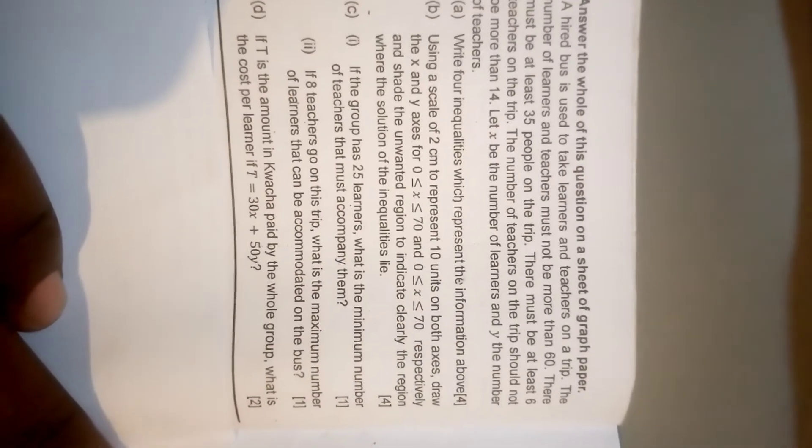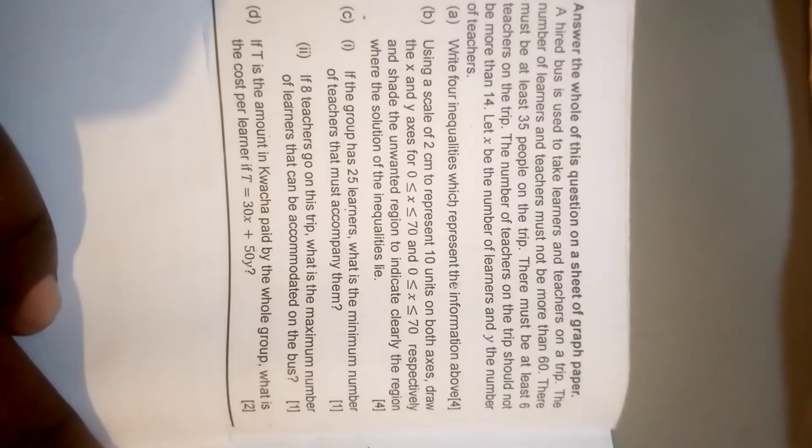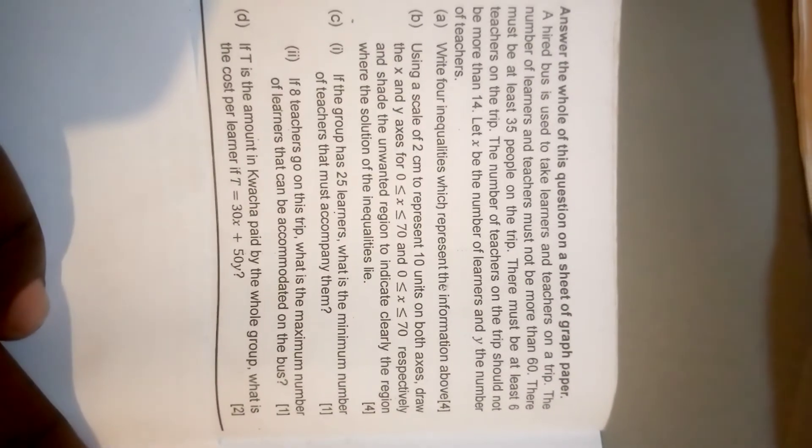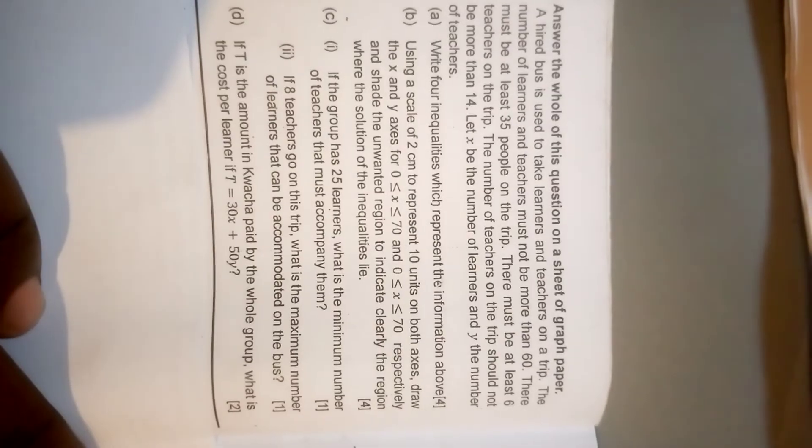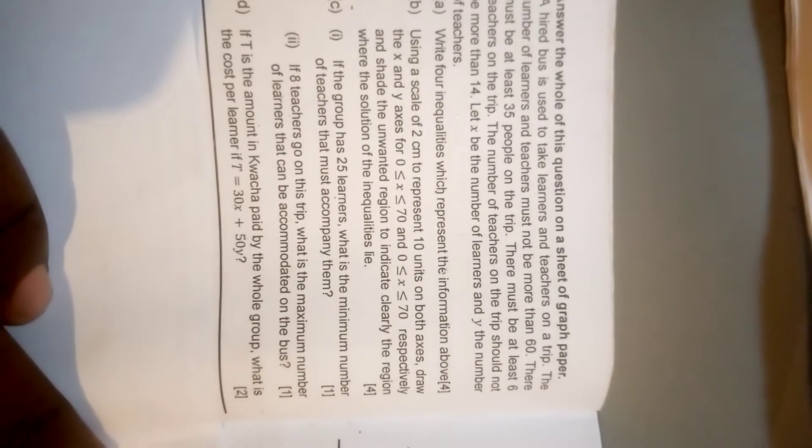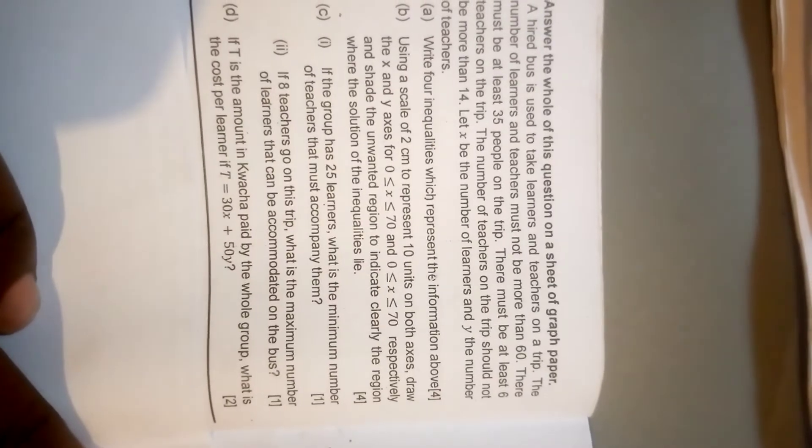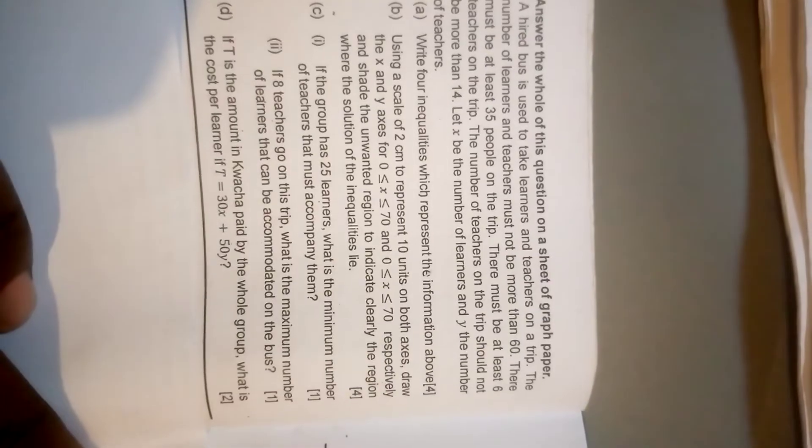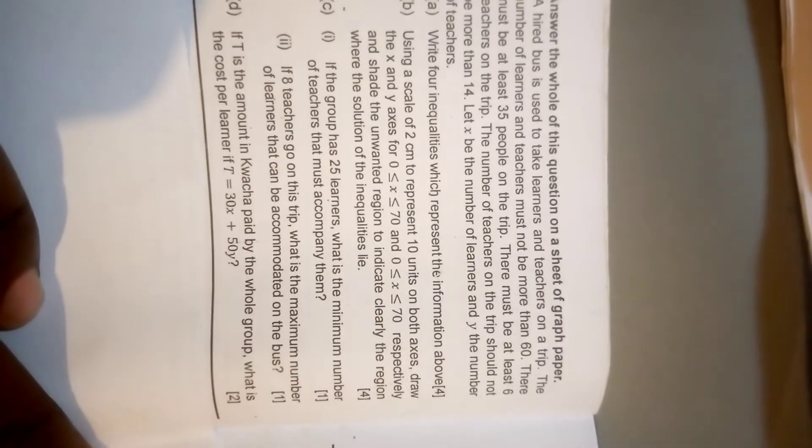Part D reads: If t is the amount of kwacha paid by the whole group, what is the cost per learner if t is equal to 30x plus 50y? Let's sort this one out.